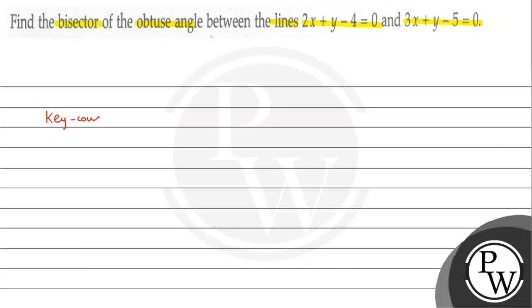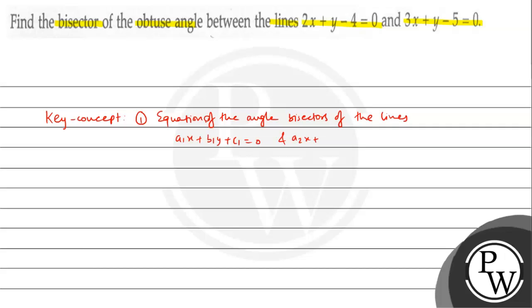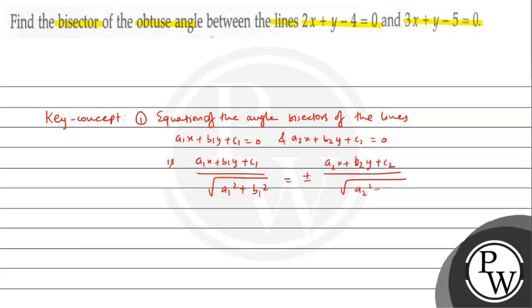It's a very simple question. First, we have a key concept. The equation of the angle bisectors of the lines a1x + b1y + c1 = 0 and a2x + b2y + c2 = 0 is given by the formula: (a1x + b1y + c1) / √(a1² + b1²) = ± (a2x + b2y + c2) / √(a2² + b2²).